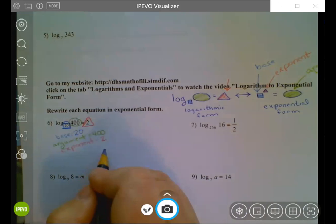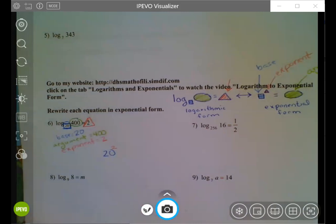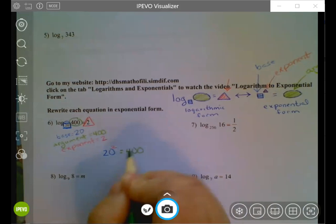So what I have in exponential form is that 20 raised to the second power, or 20 squared equals 400. That's it. Just rearranging.